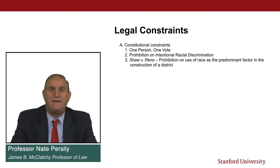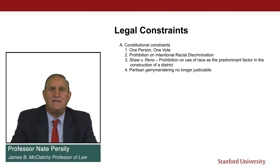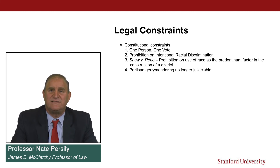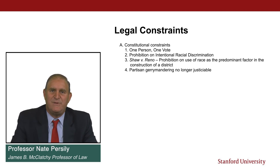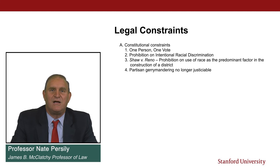When it comes to constitutional constraints, we should mention partisan gerrymandering — one that is no longer a constitutional constraint because of the Supreme Court case Rucho v. Common Cause in 2019. Up until that case, there was the possibility that the Court would find that intentional discrimination against people on the basis of partisanship in the redistricting process would be illegal or unconstitutional. The Supreme Court said no — that presents a non-justiciable political question. It is not the kind of claim by which you can go to court and say it's unconstitutional under the 14th Amendment. There is no federal constitutional claim with respect to partisan gerrymandering.